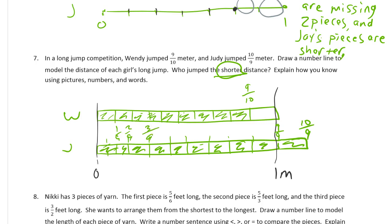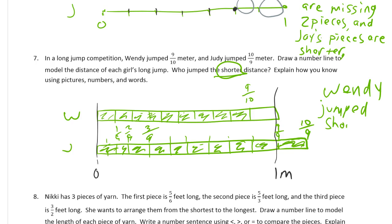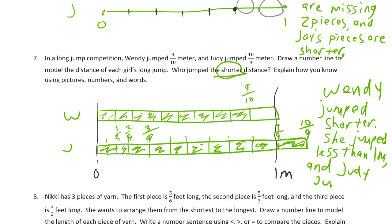You really don't have to label all of them. Who jumped a shorter distance? Wendy jumped shorter. She jumped less than one meter, and Judy jumped over one meter.